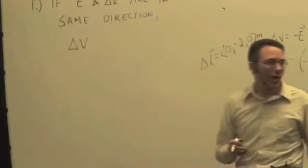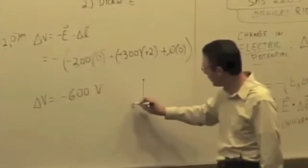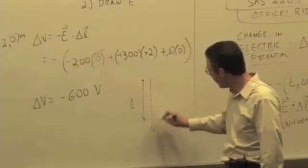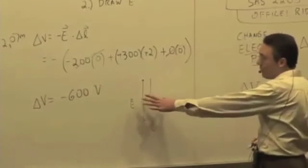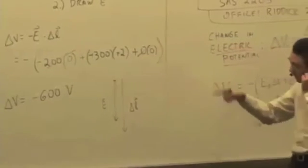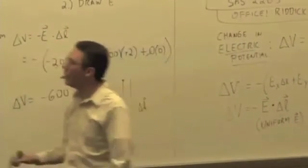It was negative, wasn't it? Because we said the electric field was pointing down and the path was pointing down. The dot product E dot ΔL, if they are in the same direction, will give you positive, but you are multiplying by a negative sign. There is always this negative sign out front.